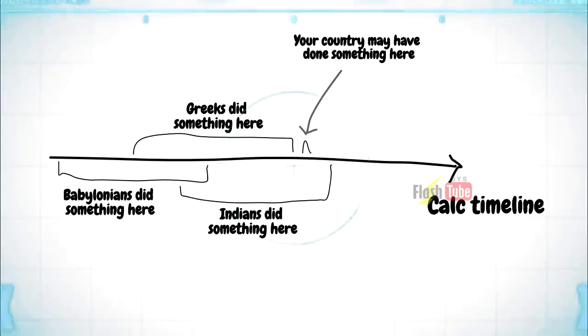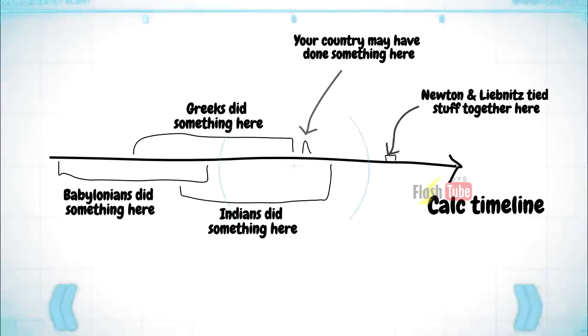The history of calculus and mathematics isn't straightforward. Different countries came up with their own methods around the same time. Using this knowledge, we attribute its flourishing as a promising field to the people who tied it all together.